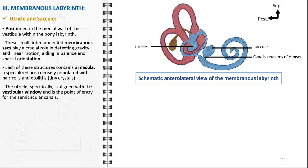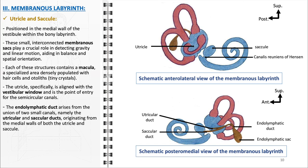The utricle, in particular, has a unique orientation. It is horizontally aligned with the vestibular window and is the point of entry for the semicircular canals, making it especially sensitive to horizontal movements such as forward and sideways motion. Furthermore, the endolymphatic duct arises from the union of two small canals — the utricular and saccular ducts — which originate from the medial walls of the utricle and saccule respectively. The endolymphatic duct plays a significant role in maintaining the delicate balance of endolymph within the membranous labyrinth.